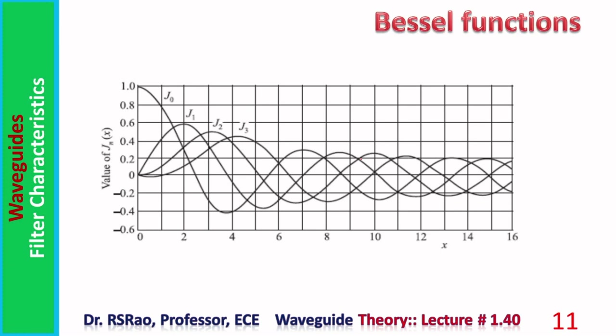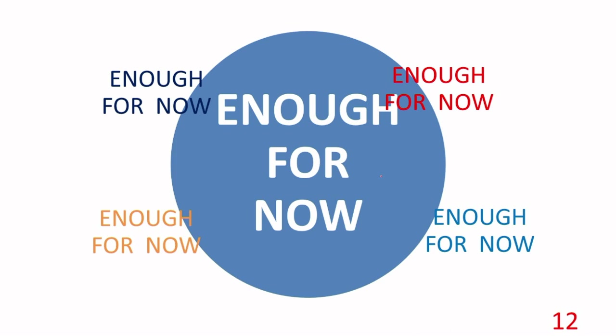A couple of important points about Bessel functions: First, all functions J₁, J₂, J₃ start from zero at the origin, except J₀ which starts from one. Second, appearance-wise, as you move away from the origin they are very much similar to sinusoidal functions — but they are not sinusoidal and they are not periodic. These are the key aspects to keep in mind. That covers the filter characteristics of waveguides.